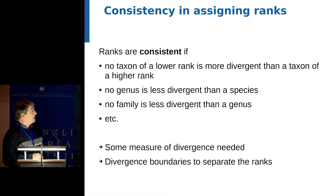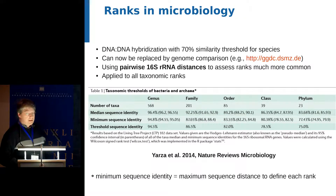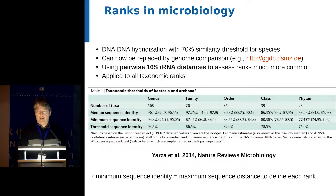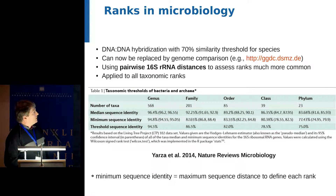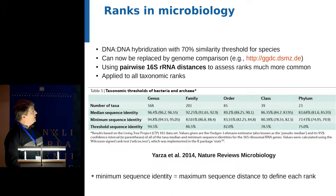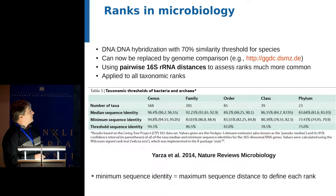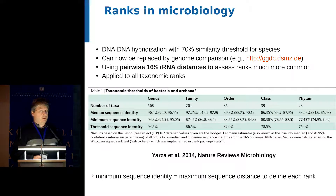This indicates that we should use divergence boundaries to separate the ranks. This is something actually done in microbiology and the classification of archaea and bacteria for quite a long time. For instance, DNA-DNA hybridization with a 70% similarity threshold has been used very frequently and is still the gold standard for defining bacterial species. This can now be replaced by genome comparisons — intergenomic distances between completely sequenced genomes give you an approximate version of such a DNA hybridization value, with a much lower error rate.